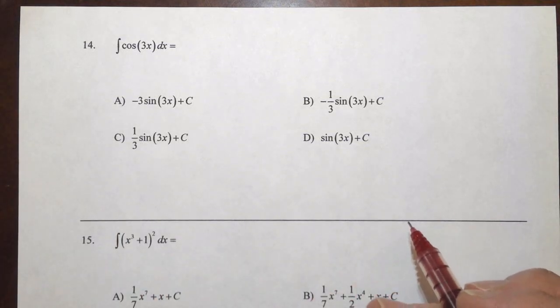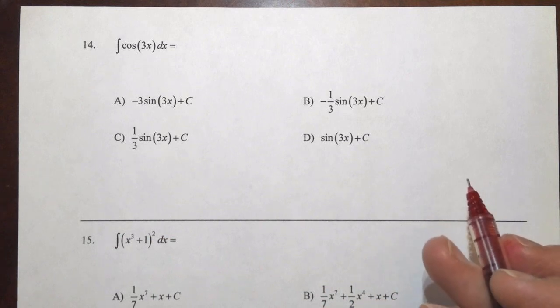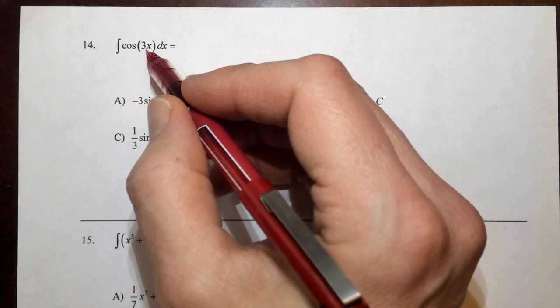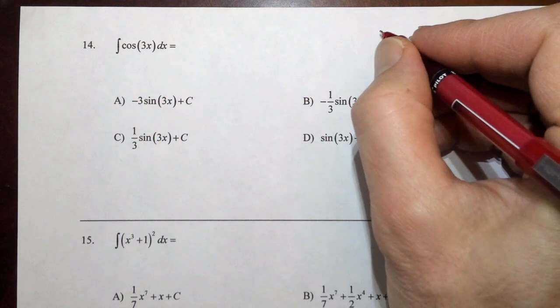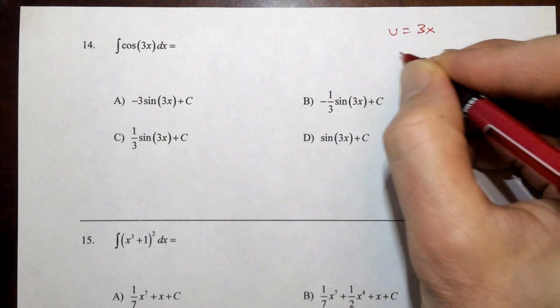So 14, now we're getting into our antiderivatives. With 14, we see the antiderivative of the cosine of 3x. We have an inner function here, so that's our trigger that we're going to make u equal to that inner function, u is 3x.